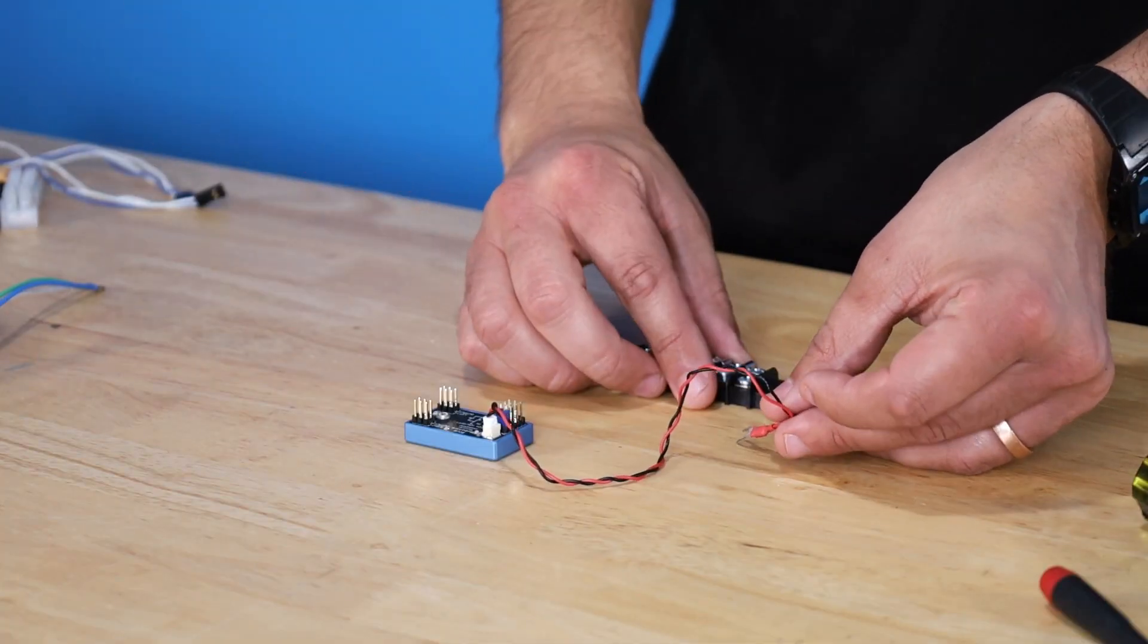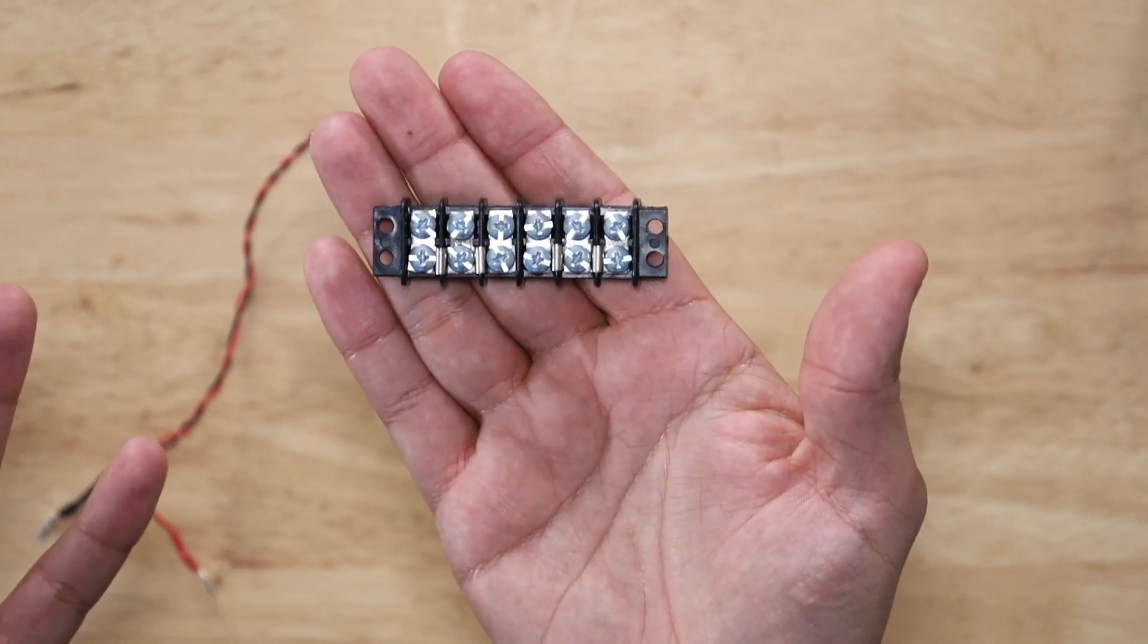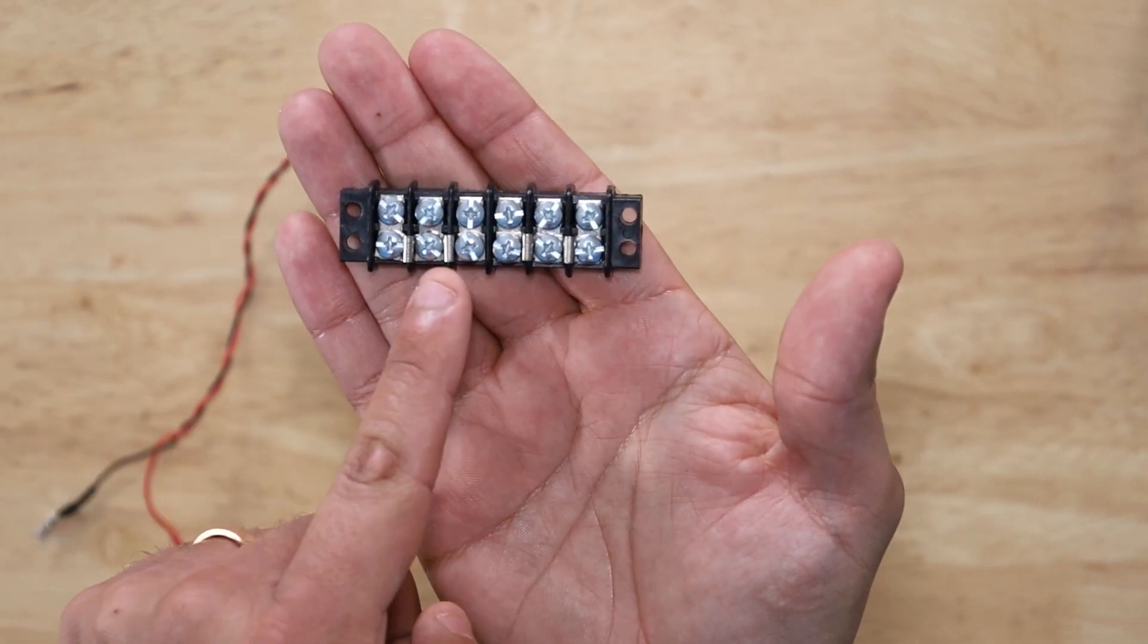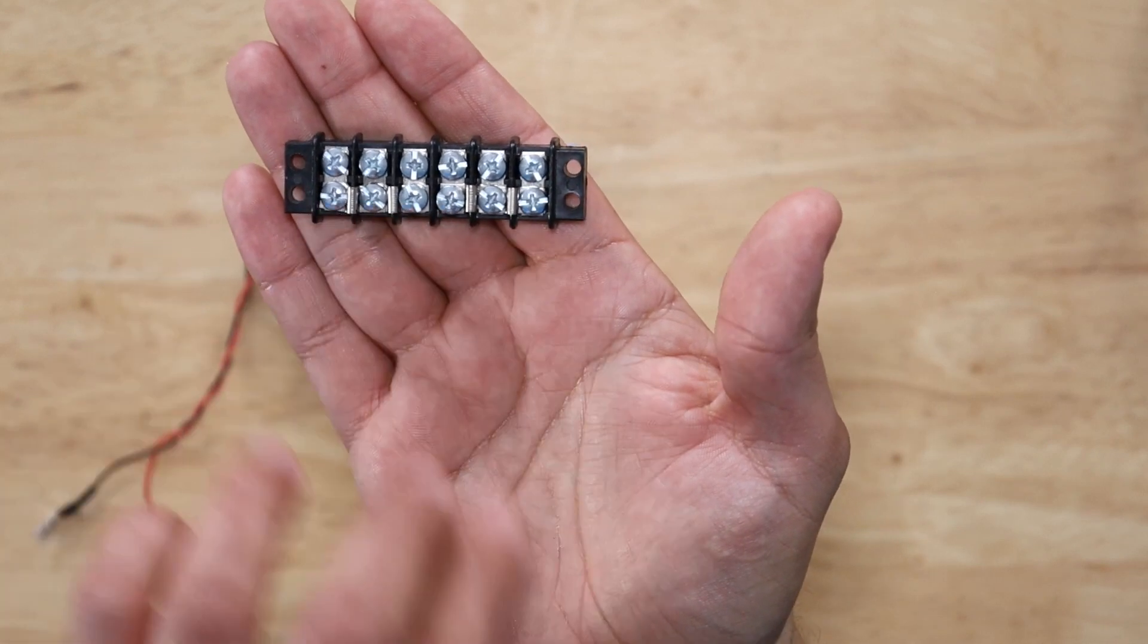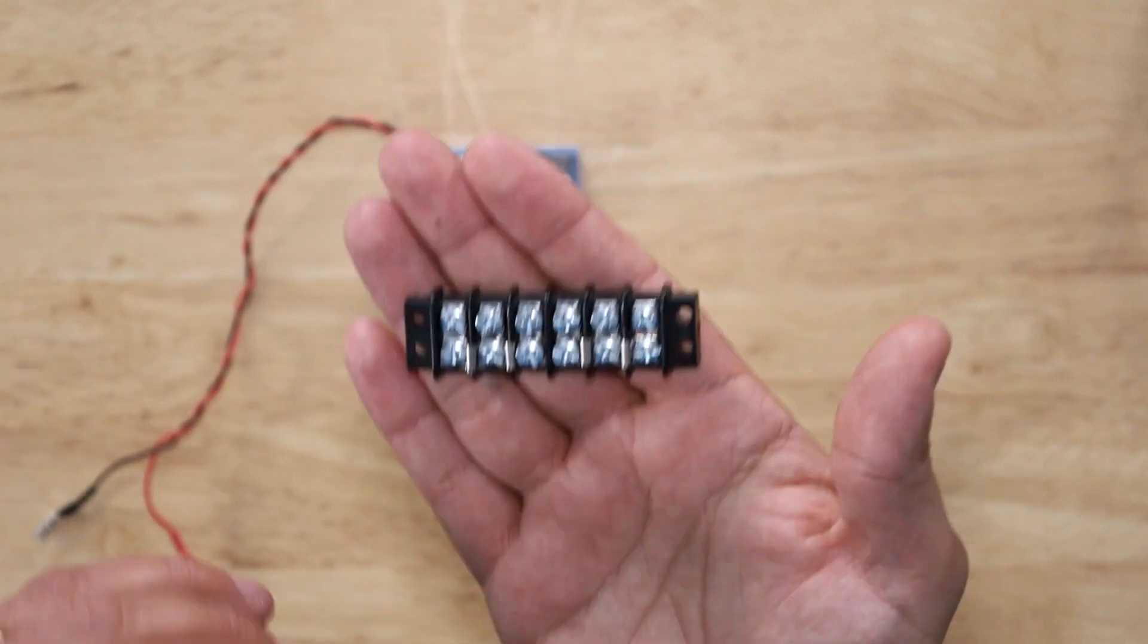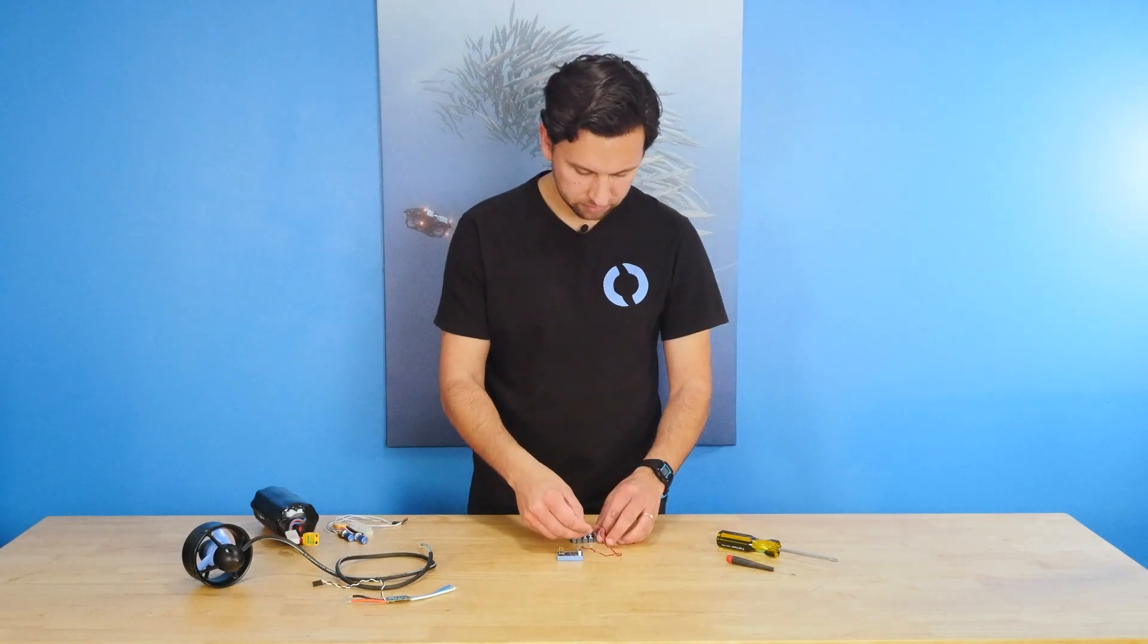I'm going to connect this up to the terminal block, and I just want to point out this terminal block has six positions so that you can connect quite a few things to it. And the thruster commander comes with these four jumpers. I've already installed those here to group this into three connections on the left side for ground and three connections on the right side for power. So we'll connect up the power here first.